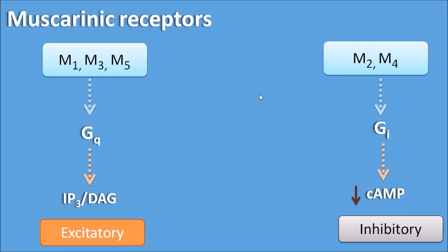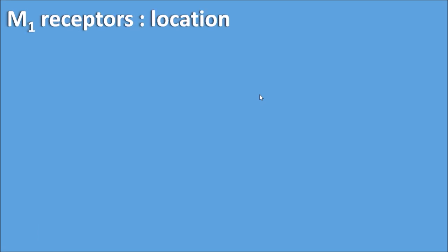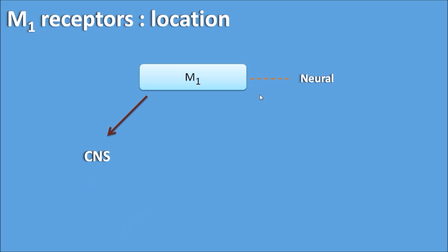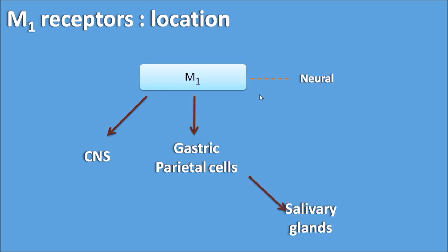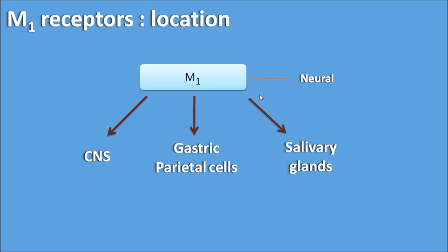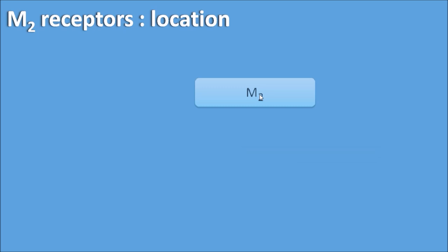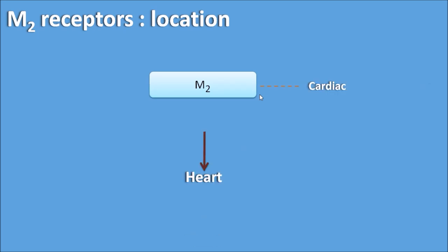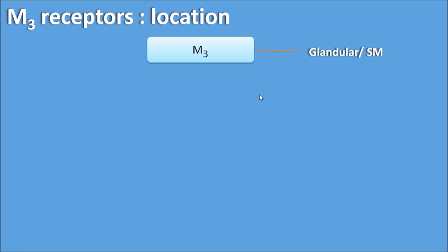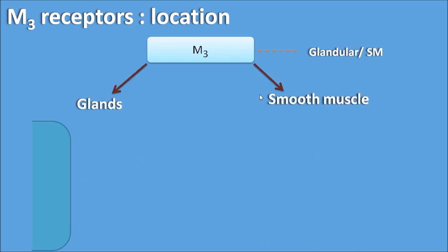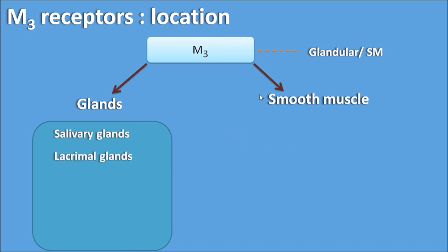Let us go in detail about M1, M2, and M3 receptors. M1 receptors are called neural receptors and are mainly present at three locations: the CNS, gastric parietal cells where they are responsible for gastric acid secretion, and salivary glands where they are responsible for salivary secretion. M2 receptors are called cardiac receptors, mainly present on the heart and inhibitory in nature, thereby decreasing cardiac function. M3 receptors are called glandular or smooth muscle type, present on glands including salivary glands, lacrimal glands, sweat glands, bronchial glands, and gastric glands.